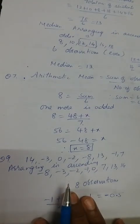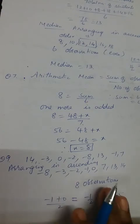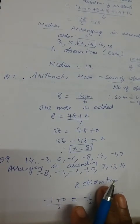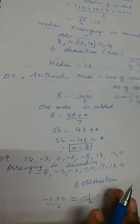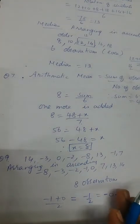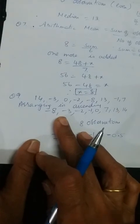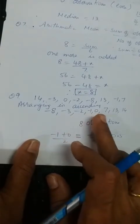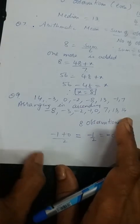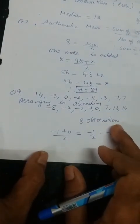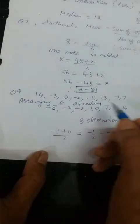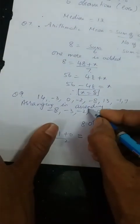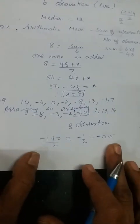The eighth one — calculate the mean, median and mode — you can do that as homework. For the ninth one, first arrange the data. The smallest value is minus 8. Arranged: −8, −3, −2, −1, 0, 7, 13, 14 — 8 observations total. The two middle values are −1 and 0. So median = (−1 + 0)/2 = −0.5.